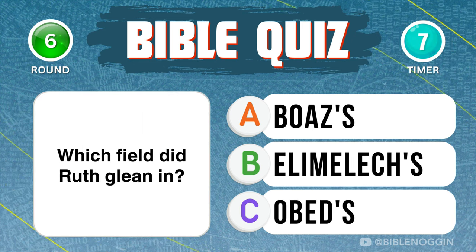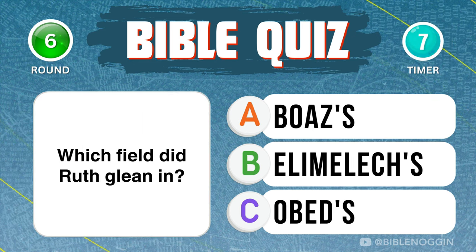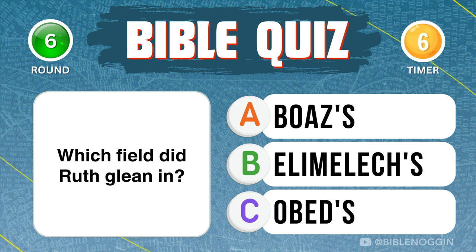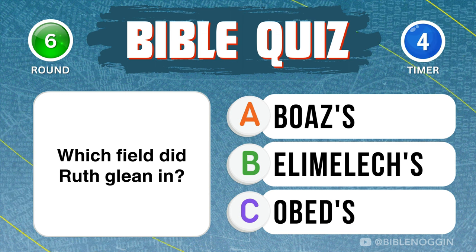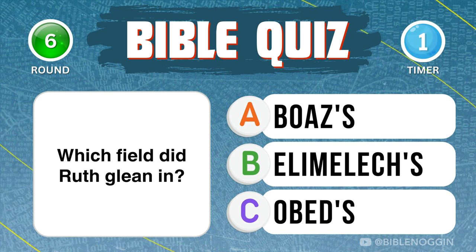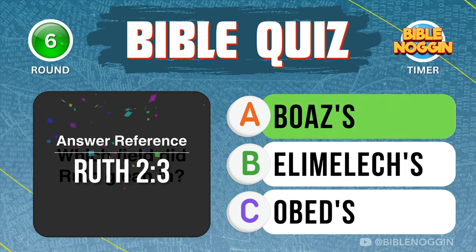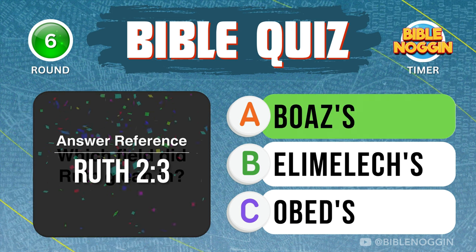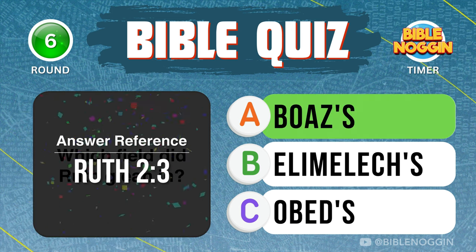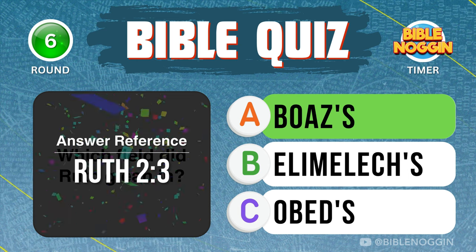Question 6: Which field did Ruth glean in? Boaz's — found in Ruth chapter 2, verse 3.